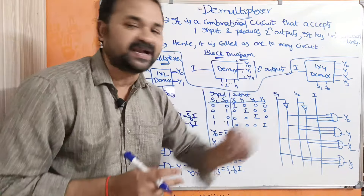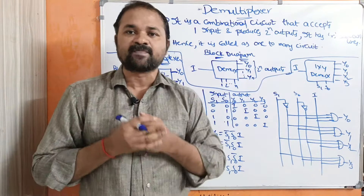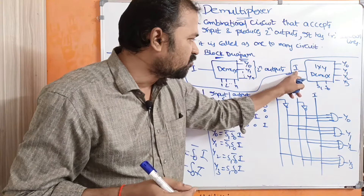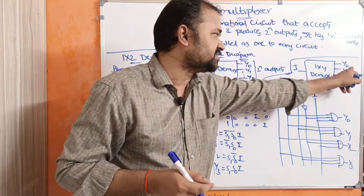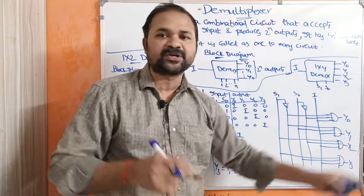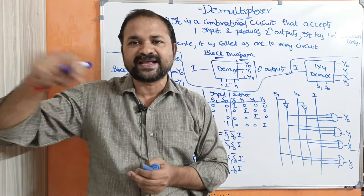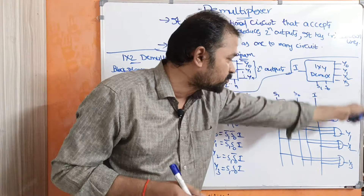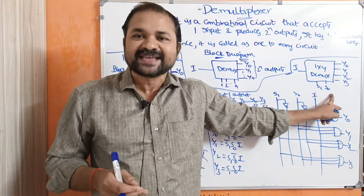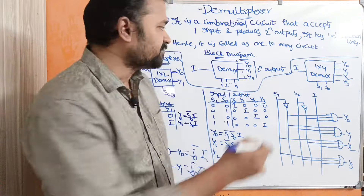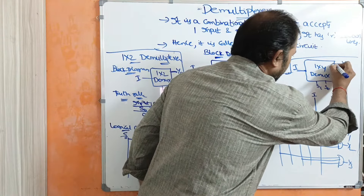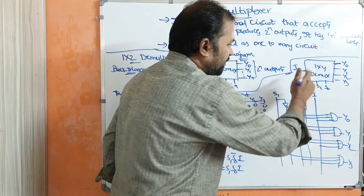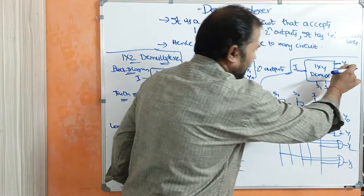Let us discuss about the 1×4 demultiplexor. The name itself specifies the meaning: 1×4 demultiplexor has one input and produces four outputs — y0, y1, y2, and y3. We have four outputs; we can write 4 as 2^2, so we have two selection lines: s1 and s0. If s1 and s0 are 0, 0, the input is connected to y0. If s1, s0 are 0, 1, the input is connected to y1.